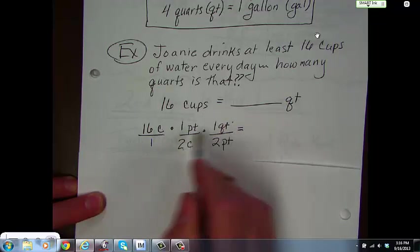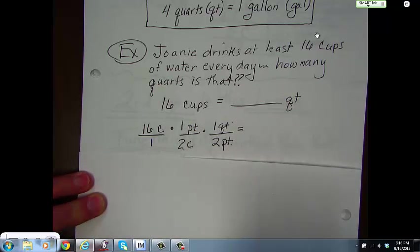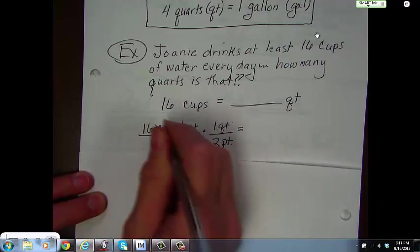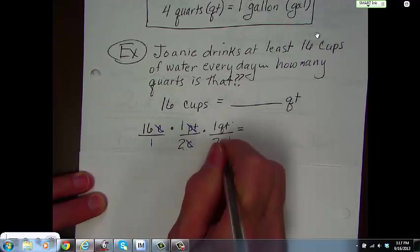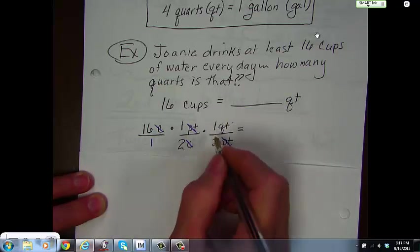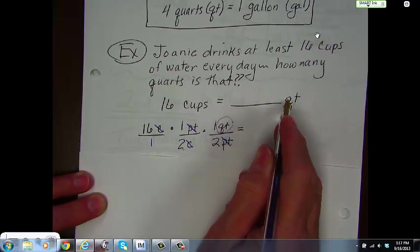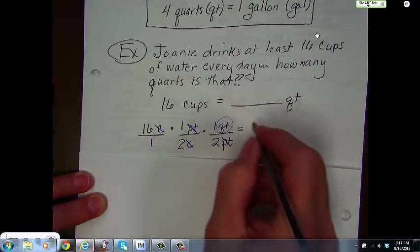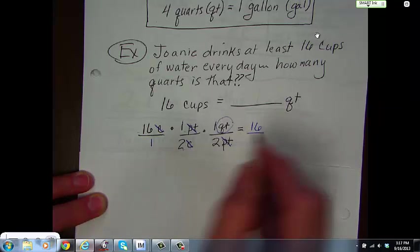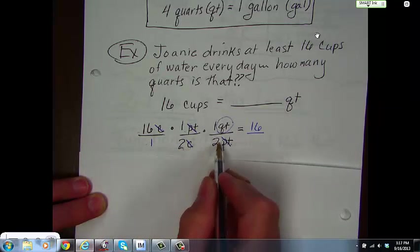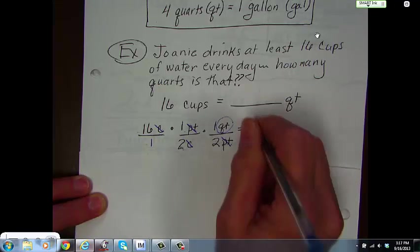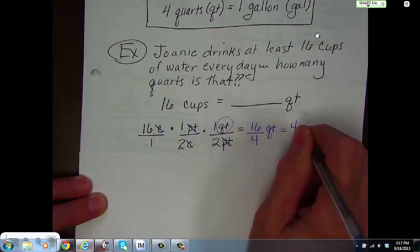And, we know that 1 pint is equal to 2 cups. So, we put the cups on the bottom. And, we know that 1 quart is equal to 2 pints. And, again, we switched it so the pints were on the bottom. And, now we can cross out cups on the top, cups on the bottom. Pints on the top, pints on the bottom. We are left with quarts, which is what we're looking for here. 16 times 1 is 16 times 1 is 16. And, 1 times 2 is 2 times 2 is 4 quarts.